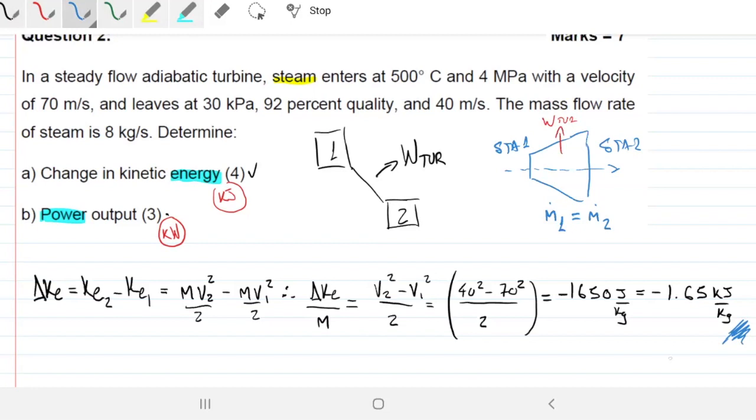In which case that is 40 squared minus 70 squared divided by 2, which equals negative 1,650 joules per kilogram. This is the same thing as minus 1.65 kilojoules per kilogram. It's especially useful to do this now because then I can use this kinetic energy already in kilojoules. This is the answer for A.